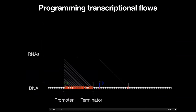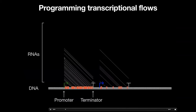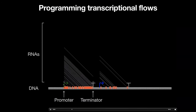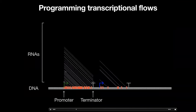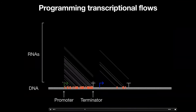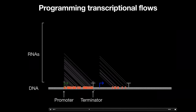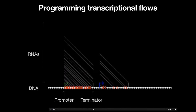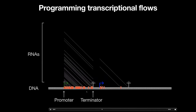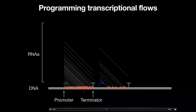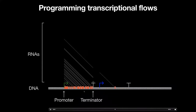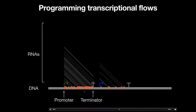To do this we can make use of really simple genetic parts like promoters and terminators. Promoters enable RNA polymerases to bind and start reading the DNA, while terminators cause them to halt and disassociate. By positioning these promoters and terminators we can affect where the RNA polymerase flows are able to travel and therefore how the DNA itself is read.